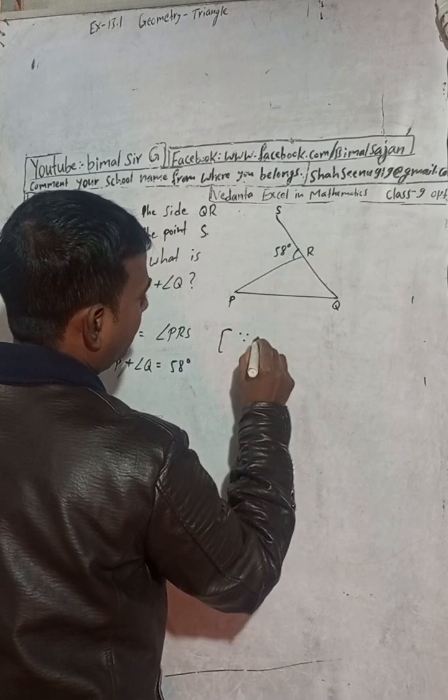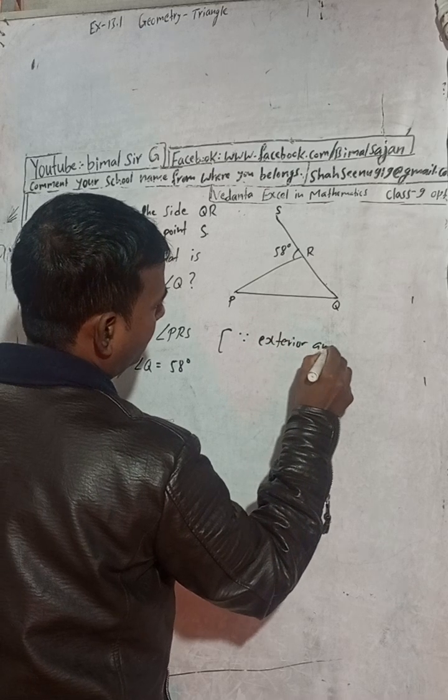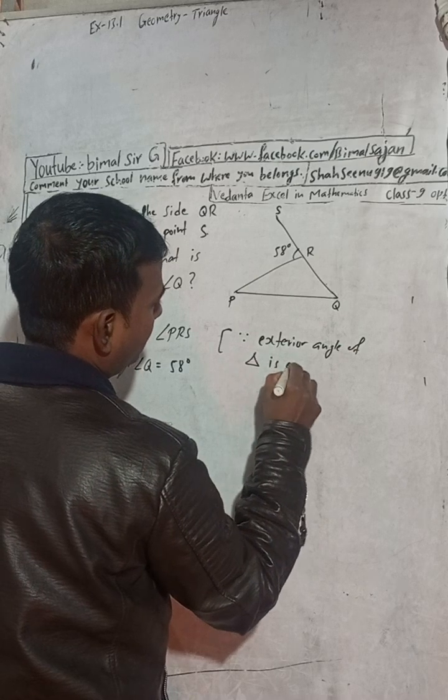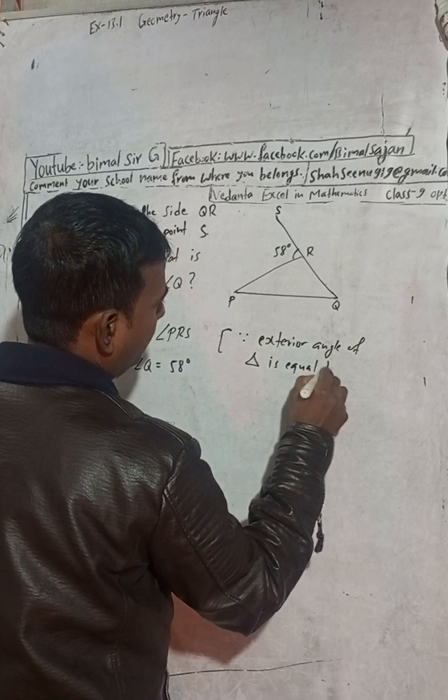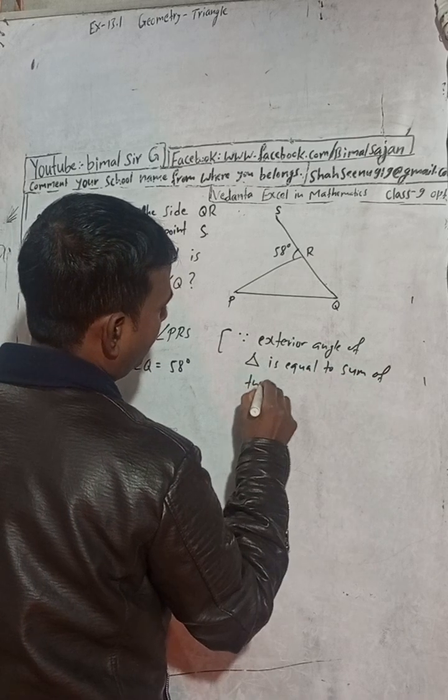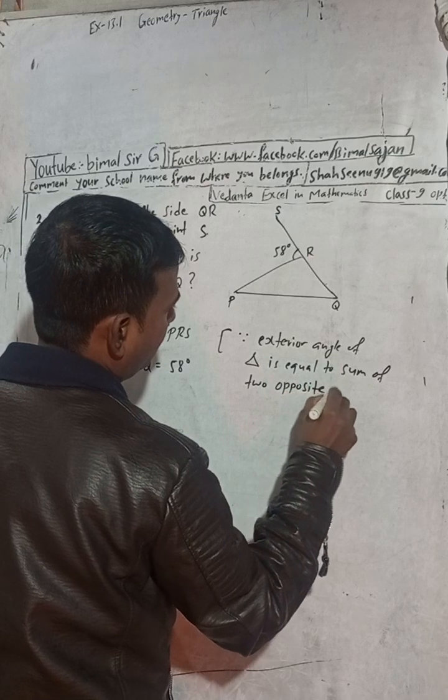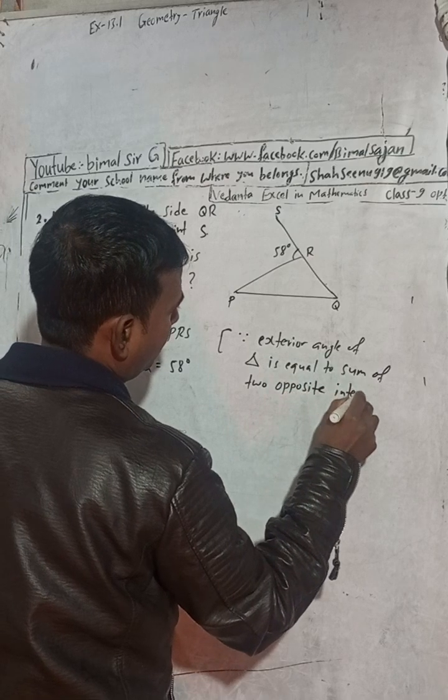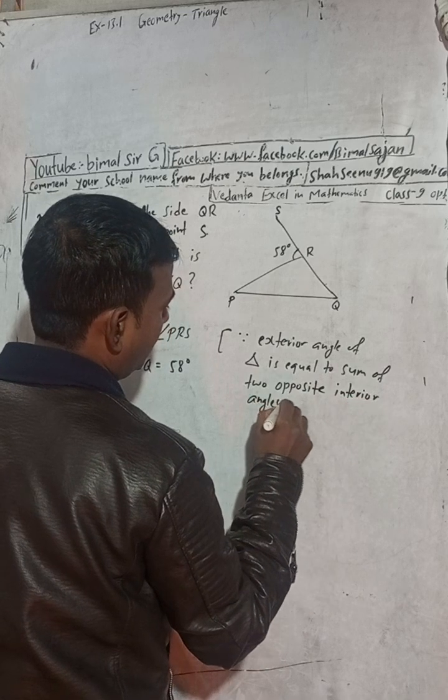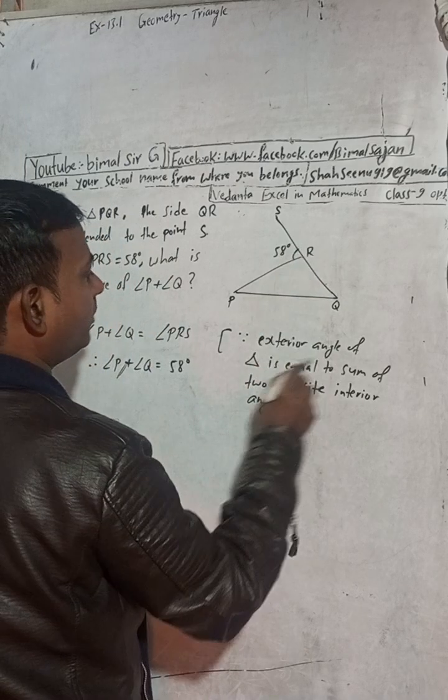This is called the exterior angle. The exterior angle of a triangle is equal to sum of two opposite interior angles. This exterior angle of triangle is equal to sum of two opposite interior angles.